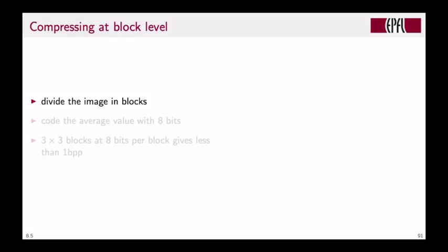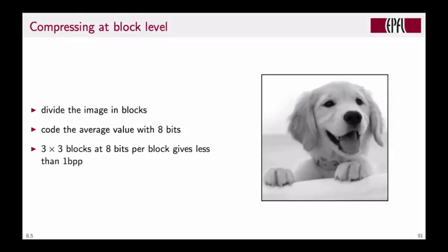By comparison, let's look at a simple compression strategy operating at block level. We divide the image into blocks and code the average value with 8 bits. Using 3 by 3 pixel blocks with 8 bits per block, we use less than 1 bit per pixel. The result shows some jagged edges—block artifacts from splitting into small blocks—but the overall result is much better than pixel level compression at the same bit rate.